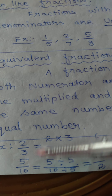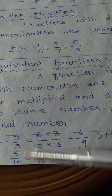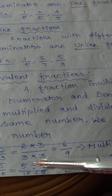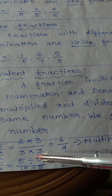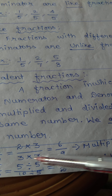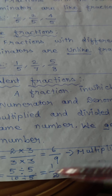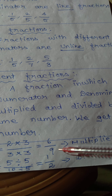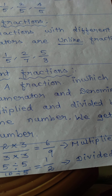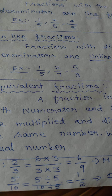Now for division: take 5 by 10. Divide both numerator and denominator by the same number, 5: 5 divided by 5 is 1, and 10 divided by 5 is 2. So 5 by 10 equals 1 by 2. This is an equivalent fraction by division.